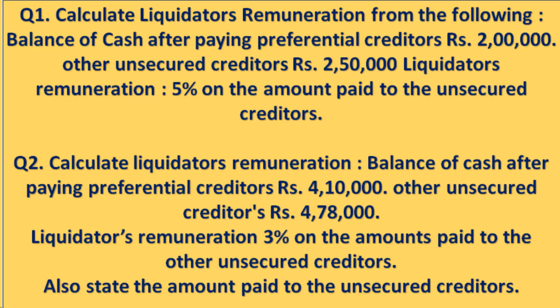Now let us discuss the second question. Question number two: calculate liquidator's remuneration. Balance of cash after paying preferential creditors is rupees 4 lakh 10,000. Other unsecured creditors are rupees 4 lakh 78,000. Liquidator's remuneration is 3% on the amounts paid to the other unsecured creditors. Also state the amount paid to the unsecured creditors.